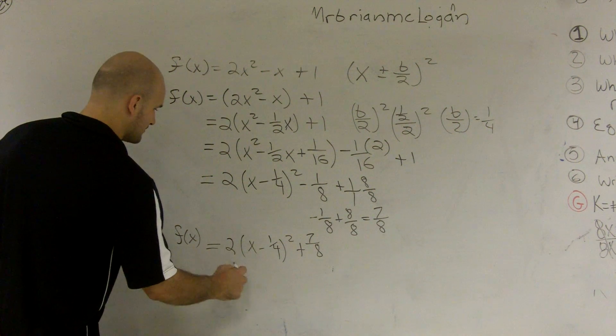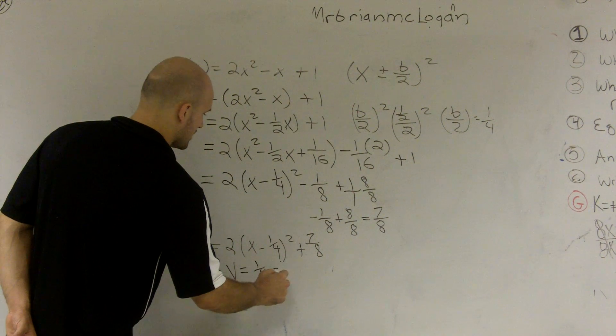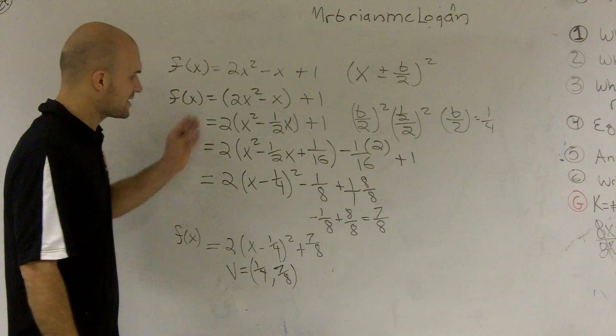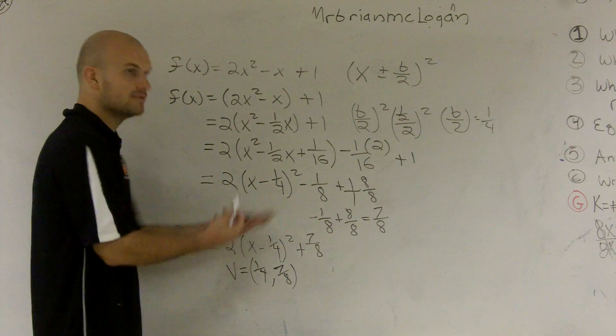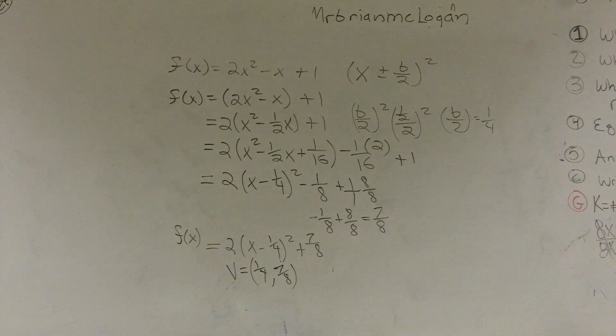If I wanted to find the vertex, the vertex for this would be a positive 1 fourth, 7 eighths. And for time purposes, I'm not going to show you how to solve, but you know, you can just make that zero. And so, oh shoot, what's done by that? Oh, I got plenty of time. All right.